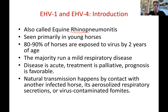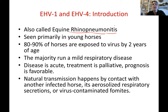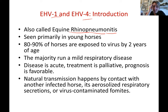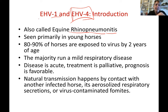Rhinopneumonitis: 'rhino' refers to the respiratory nose component, 'pneumo' refers to the lungs, and 'itis' means inflammation. It's generally seen in young horses. Equine herpes virus type 1 and type 4 are the most common among horses. Type 4 generally causes mild respiratory disease — much more mild than influenza.